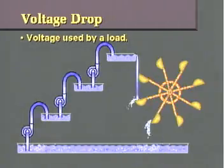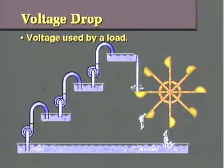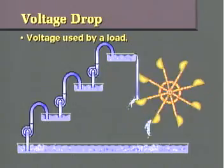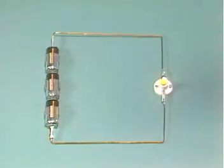A voltage drop, on the other hand, is the voltage used by a load. The load may be any device that requires voltage to operate. This could be, for instance, a heater or a lamp.